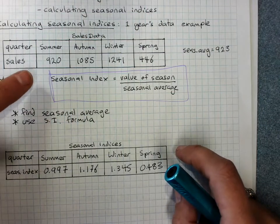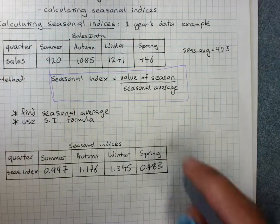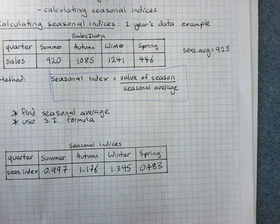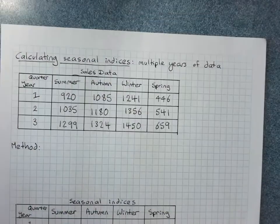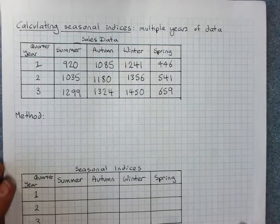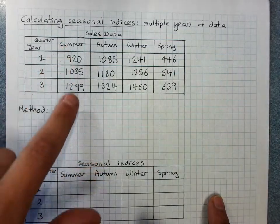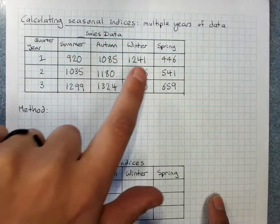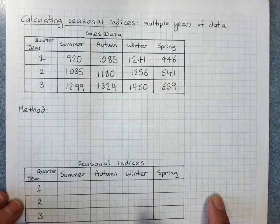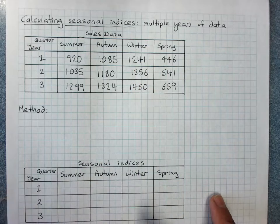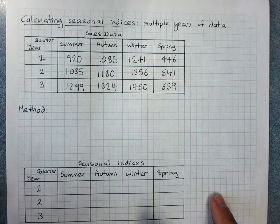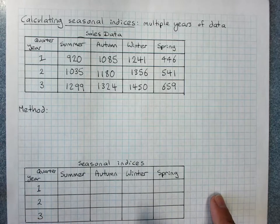But if we only have one year's data, there's not much point doing any smoothing. What becomes really valuable is when we have multiple years of data and we can look to see if there's a consistent pattern of seasonal indices, which can be really useful for finding overall seasonal indices.